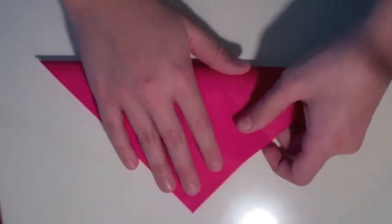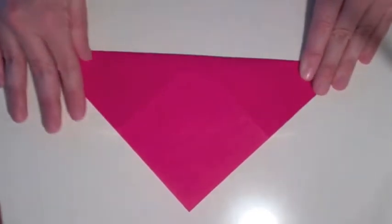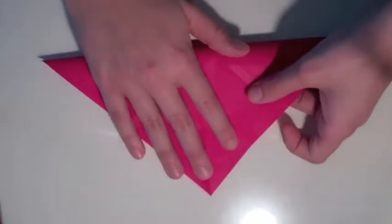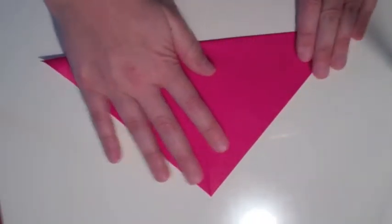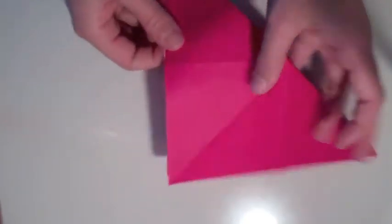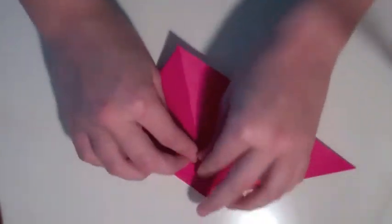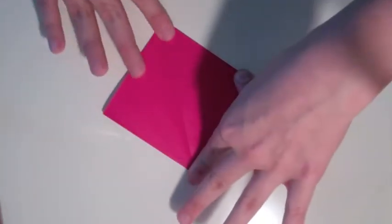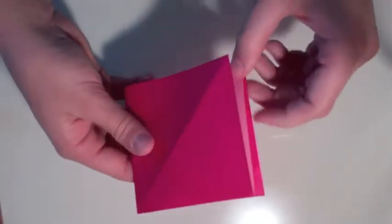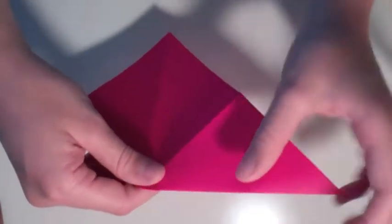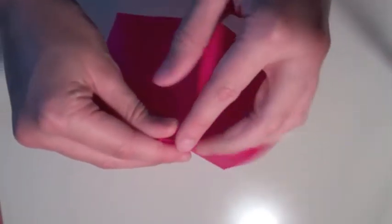Then you fold the diagonals. Then you take the flaps and tuck them in like this. Same with this one. You just kind of push it in. Just kind of take your finger and run it along so the crease is nice, and then tuck it in.